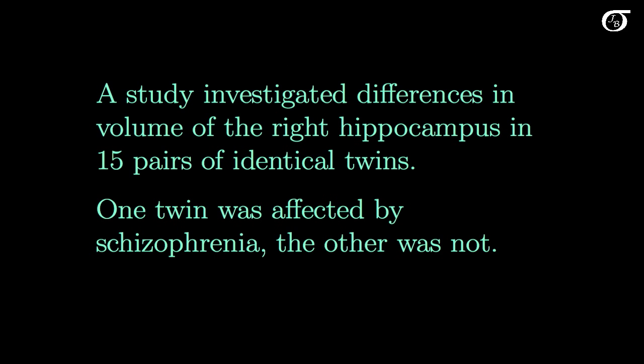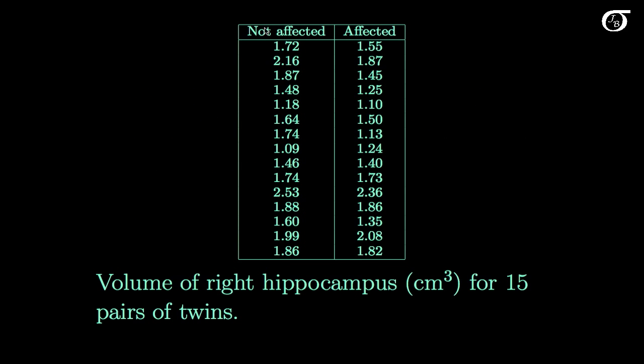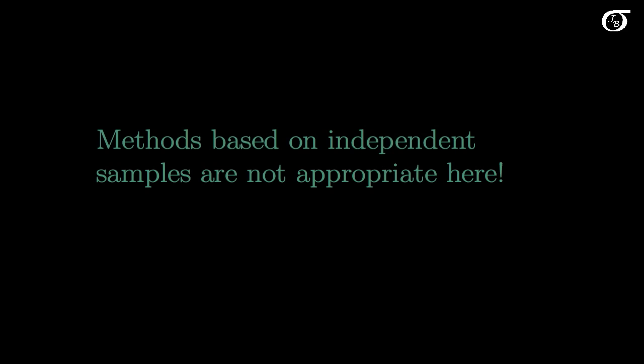We have other situations similar to this as well. A study investigated differences in the volume of the right hippocampus, an area of the brain, in 15 pairs of identical twins. One twin was affected by schizophrenia and the other was not. This first pair represents the volume of a slice of the right hippocampus for these two twins. This first twin did not have schizophrenia, this twin did. We have dependent measurements here. They're not the same individual, but there's certainly a tie—they're identical twins. So methods based on independent samples are not appropriate here.